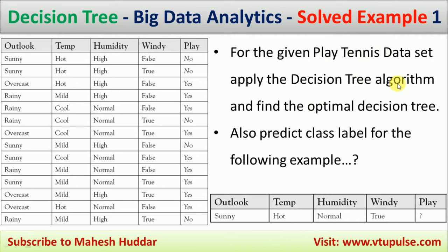The task is to apply the decision tree algorithm to find the optimal decision tree, and also to predict the class label for a new example given some conditions. We have been given four attributes: outlook, temperature, humidity, and wind. Play is the target variable, and it's a binary classification because the target has two possibilities: yes and no.